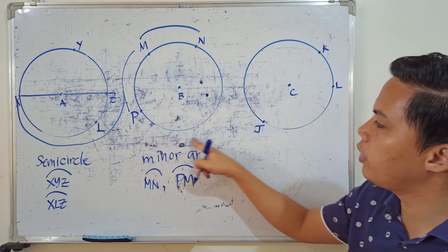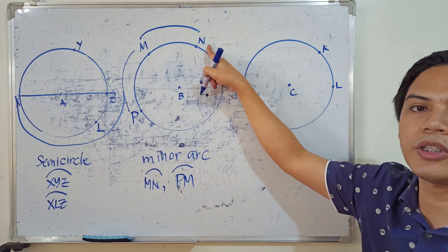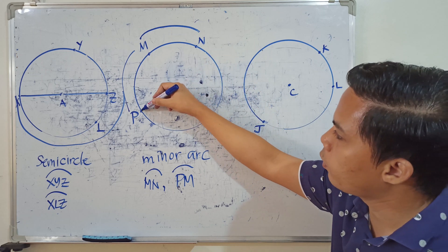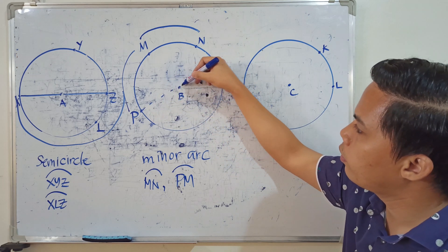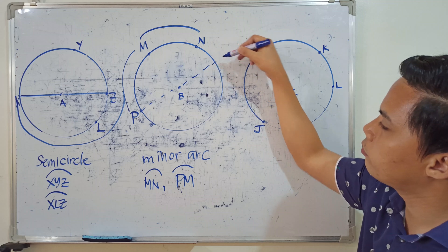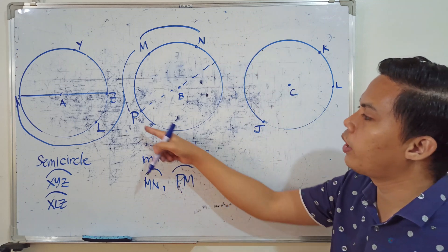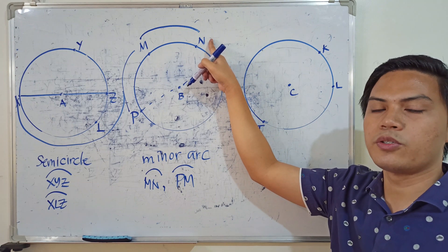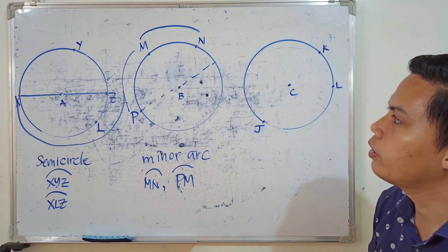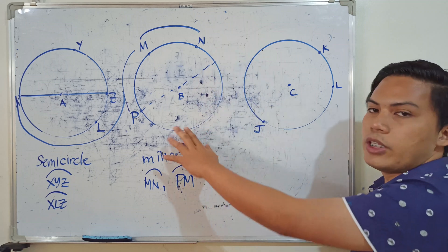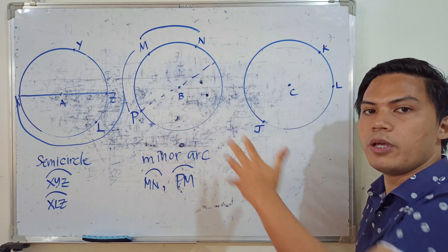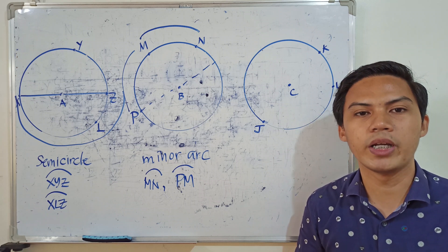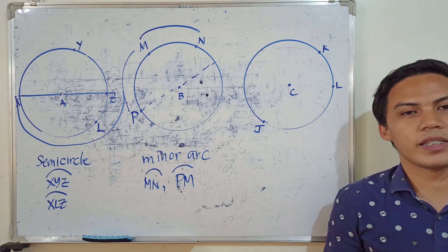What about arc PN? No, we cannot consider that a minor arc. If you draw the diameter, you'll notice that arc PN goes beyond the semicircle. So it is no longer a minor arc. By definition, the degree measurement must be less than 180 degrees.